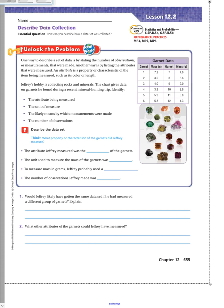Listen 12.2, Describe Data Collection. Unlock the problem. One way to describe a set of data is by stating the number of observations or measurements that were made. Another way is by listing the attributes that were measured. An attribute is a property or characteristic of the item being measured, such as its color or its length.